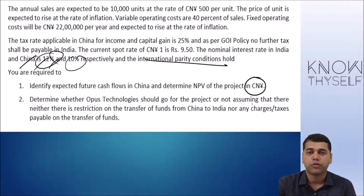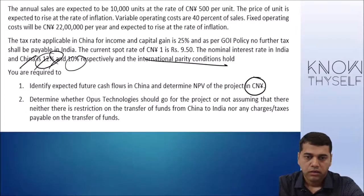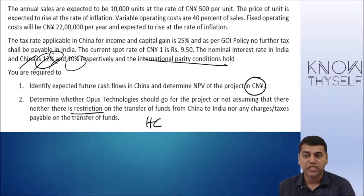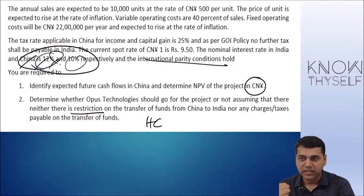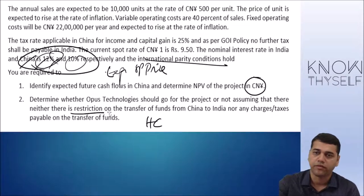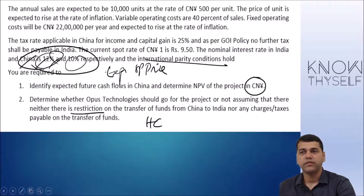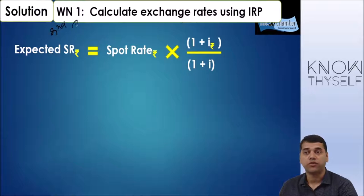Determine whether Opus Technology should go for the project or not, assuming there is neither restriction on transfer of funds from China to India nor any charges or taxes payable. For the second part, since there is no restriction on repatriation, we follow the home currency approach - whatever is earned in China can be brought back immediately. So the interest rate information is necessary to calculate the expected spot price for part two.